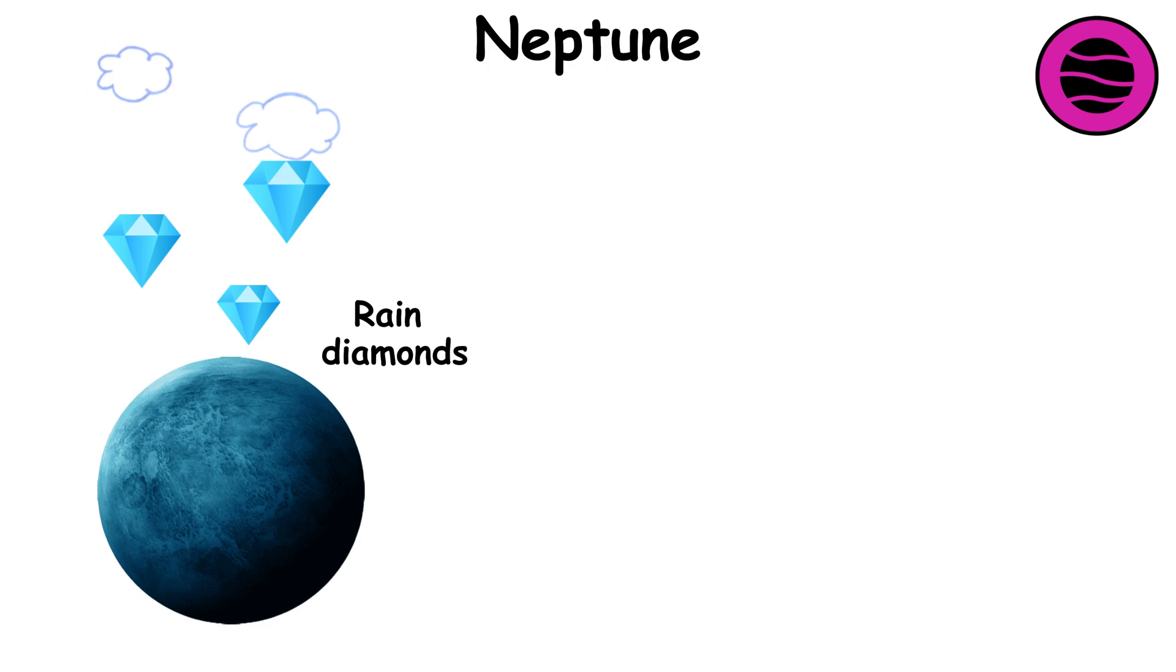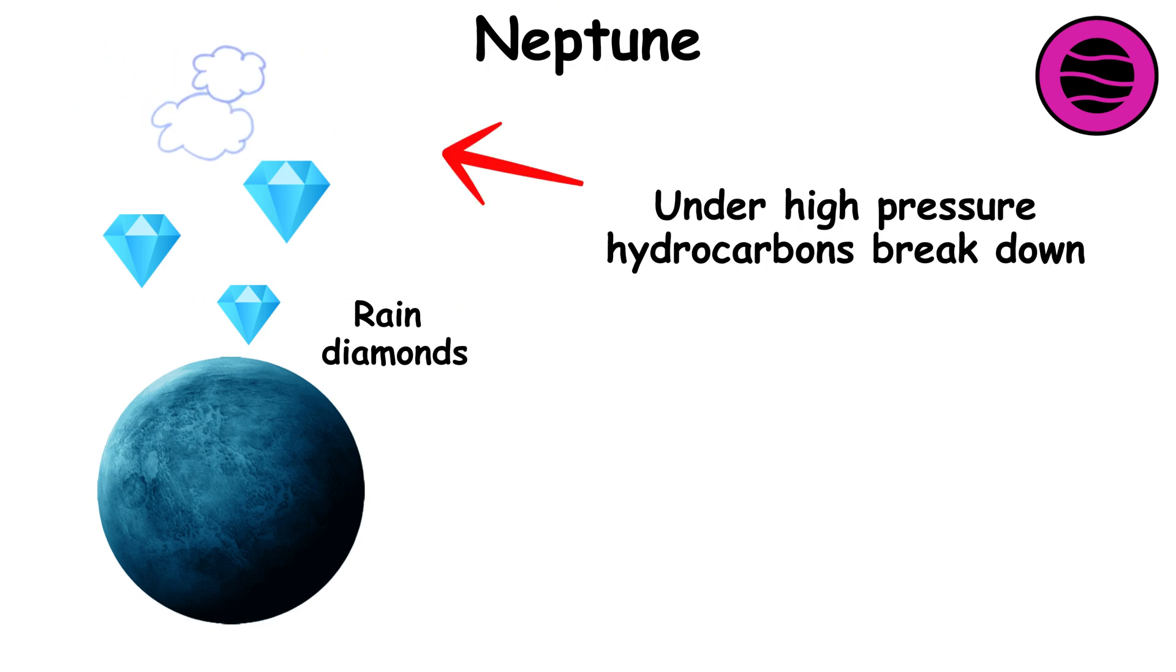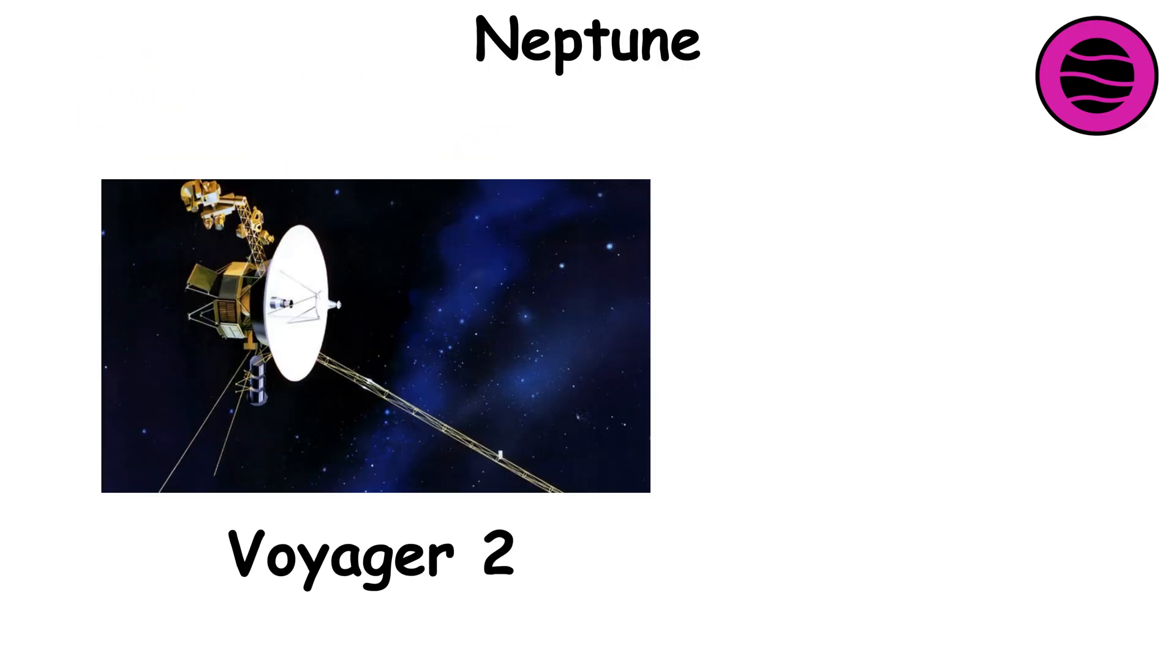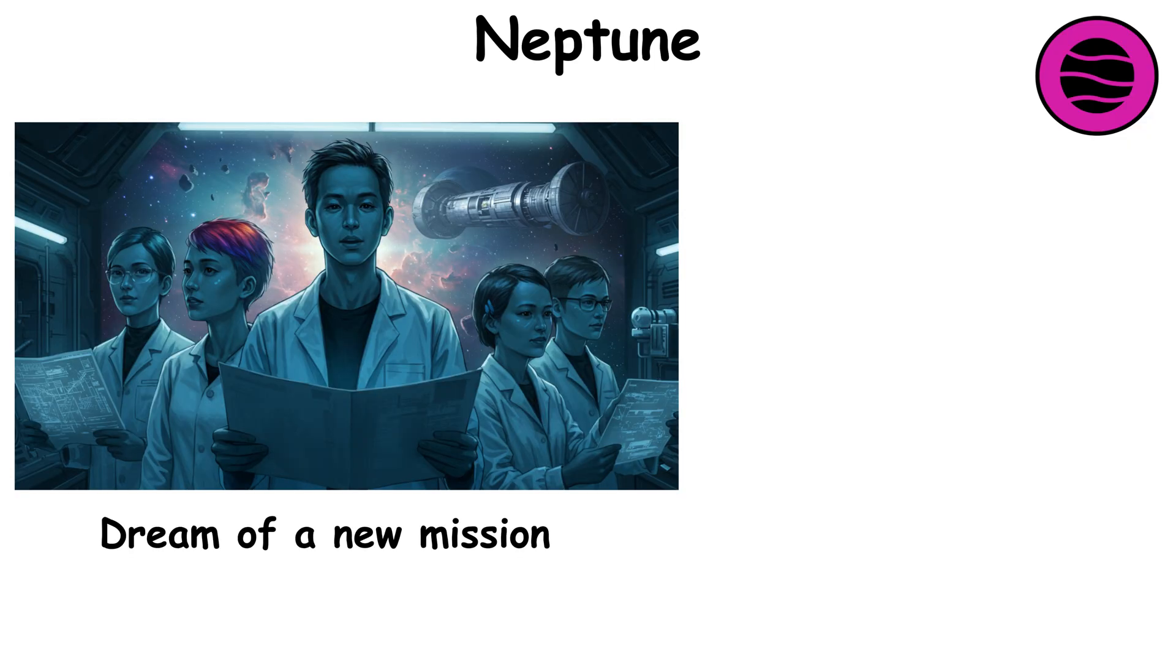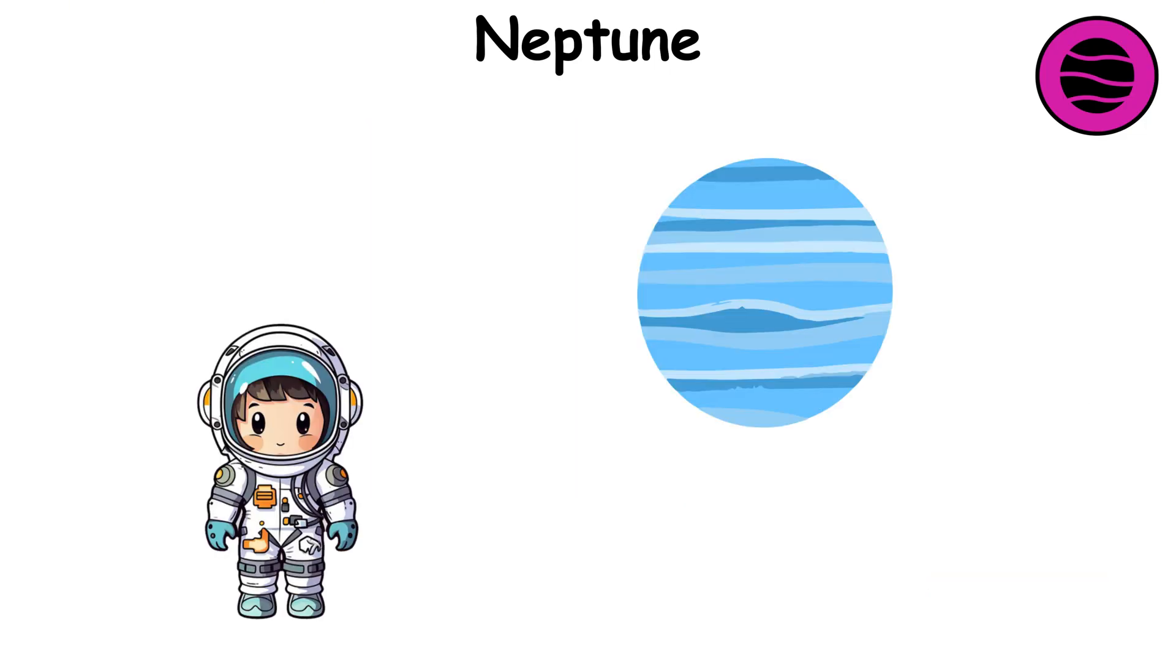It may rain diamonds on Neptune. According to theoretical models, under high pressure in the atmosphere, hydrocarbons break down, and diamond droplets form, falling deep into the planet. The planet was studied only by Voyager 2 in 1989. Scientists dream of a new mission to explore this mysterious world, studying its atmosphere and moons. Neptune remains one of the most mysterious planets in our system.